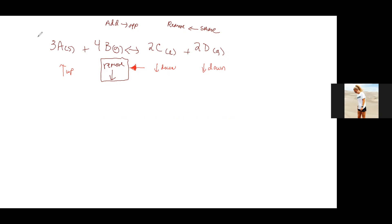A student asks for clarification: with the equilibrium shift to the right, what happens since the reactant is going? The teacher clarifies that the arrow direction is the equilibrium shift — shifting to the left means pointing left, shifting to the right means pointing right.